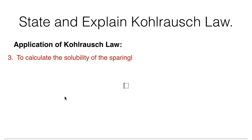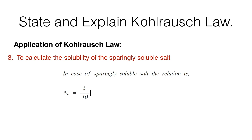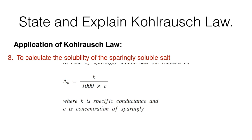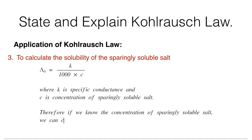Third application: to calculate the solubility of a sparingly soluble salt. In this case, the relation is λ⁰ = K / (1000 × C), where K is the specific conductance and C is the concentration of the sparingly soluble salt. Therefore, if we know the concentration of the sparingly soluble salt, we can calculate its solubility product.